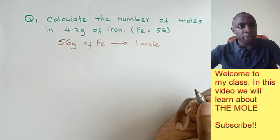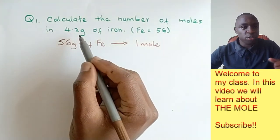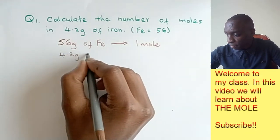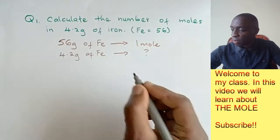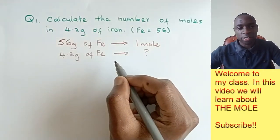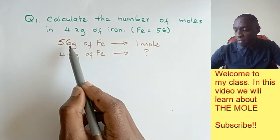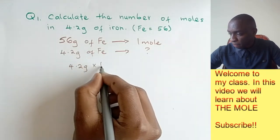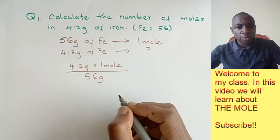Now we can ask ourselves, how about the 4.2 grams provided? In this case, we're going to cross multiply: 4.2 multiplied by 1 mole divided by 56.